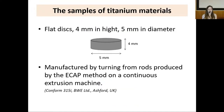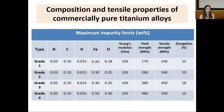The samples of titanium materials were flat discs, 4 millimeters in height and 5 millimeters in diameter, manufactured by turning from rods produced by the equal channel angular pressing method on a continuous extrusion machine.